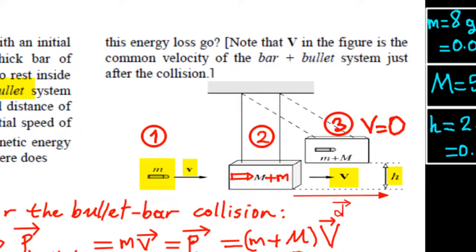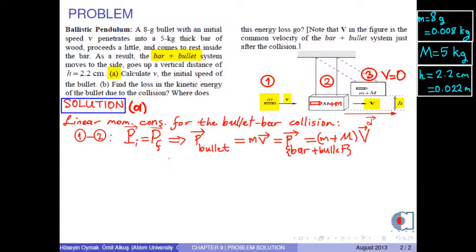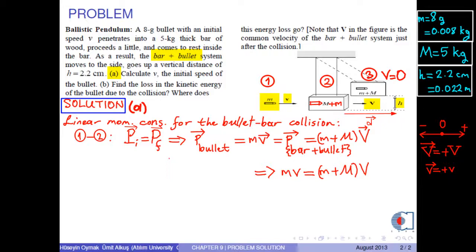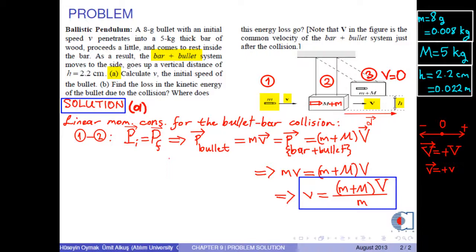Note that capital V in the figure is the common velocity of the bar plus bullet system just after the collision. Since this is an approximately one-dimensional collision, we can use positive and negative signs for the directions of velocities. Therefore, for the bullet-bar collision, we have m times v equals (m plus M) times capital V. From this, we obtain an expression for the initial speed of the bullet: small v equals (m plus M) times capital V over m.